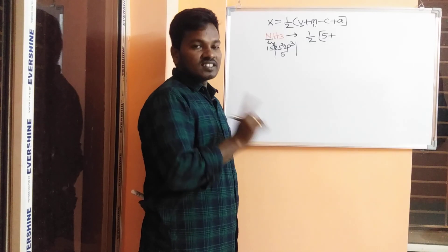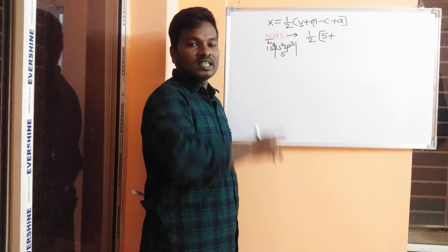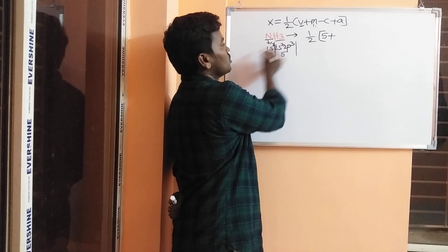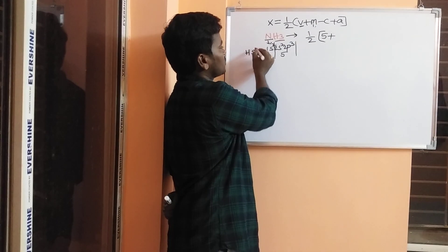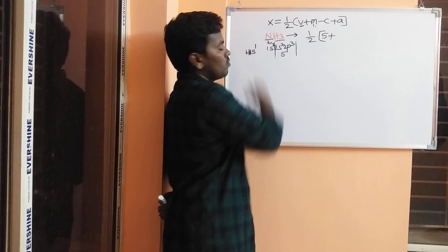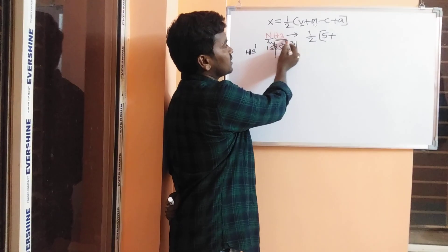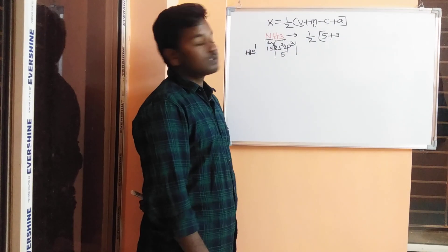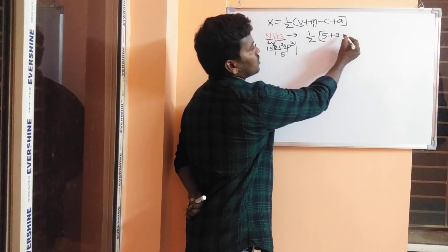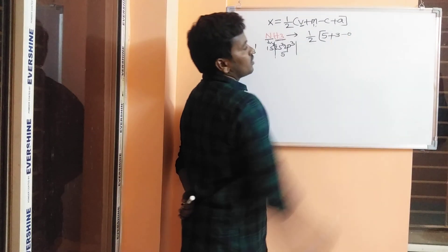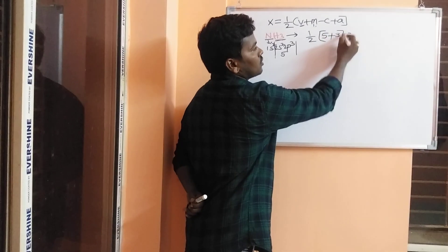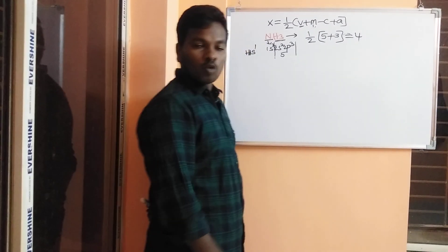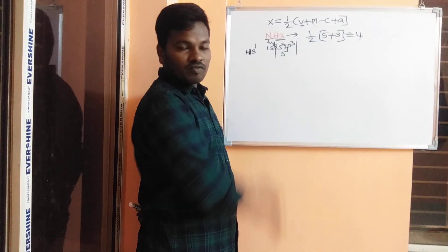Monovalent atoms: hydrogen has atomic number 1 and configuration 1s¹ — only one electron — so hydrogen is monovalent. There are 3 hydrogens, so M equals 3. There is no positive charge, so C equals 0, and there is no negative charge, so A equals 0. One by two of (5 + 3) equals 4. Since the result is 4, NH₃ has sp³ hybridization.